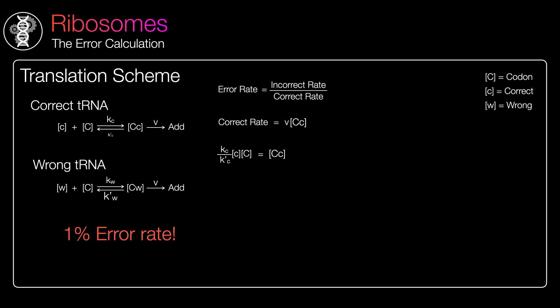we can plug in Cc into correct rate. And that's the correct rate. Do the same calculation for the incorrect rate, and we can just divide them to get the error rate. We can cancel a few stuff out. The amount of right and wrong tRNAs are approximately the same since the cell makes equal amounts of each pairing. And the rate that a tRNA enters the ribosome is roughly the same. So, plugging in the experimentally found values, we get an error rate of 0.01, or 1%.